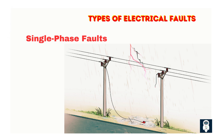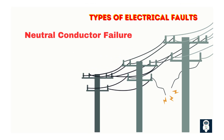Single-phase faults typically involve a phase coming into contact with the ground, creating homopolar currents limited by ground resistance. While single-phase faults may not be as disruptive as three-phase faults, they can still impact power distribution and create safety hazards. For example, if a power line touches the ground due to damaged insulation, it could cause a single-phase fault resulting in localized power outages.